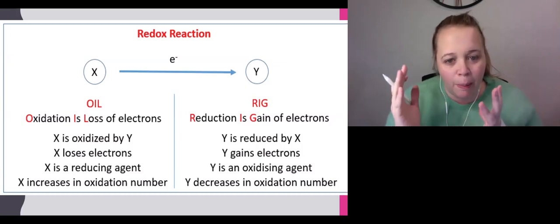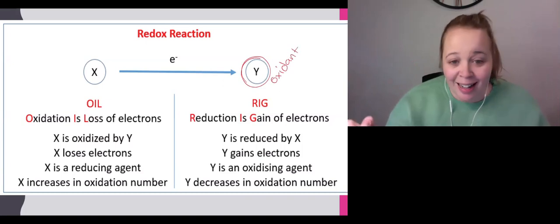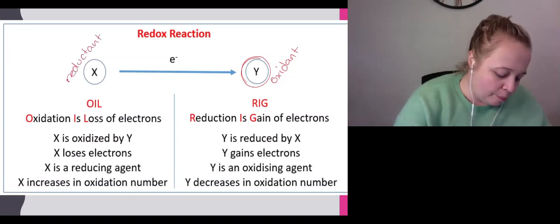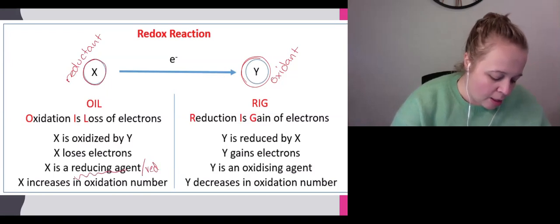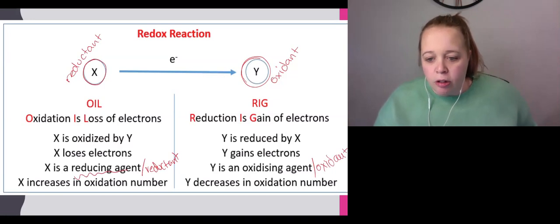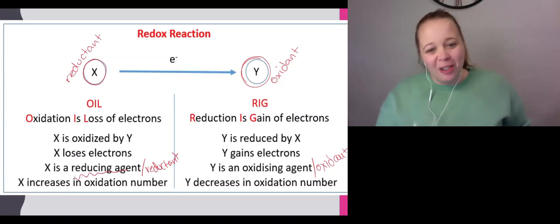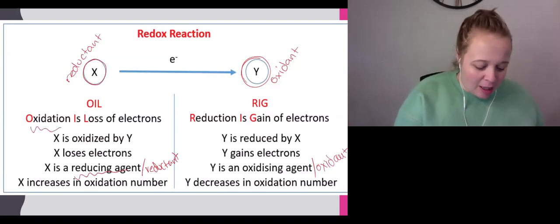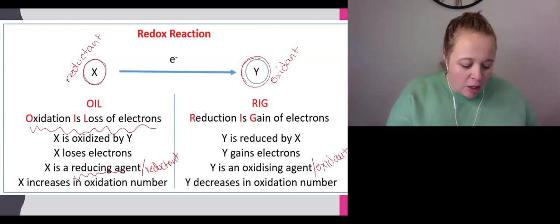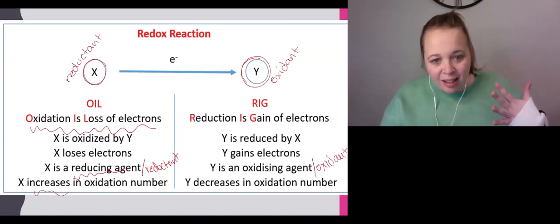The opposite is the element that gains the electron—that's the RIG part, element Y. This element is called the oxidant because it's gaining an electron. Reducing agent and reductant mean the same thing. Oxidation is loss—anything that loses electrons has undergone oxidation. If you lose electrons, you're losing negative charge, so you go up in oxidation number.